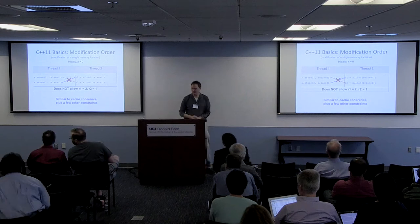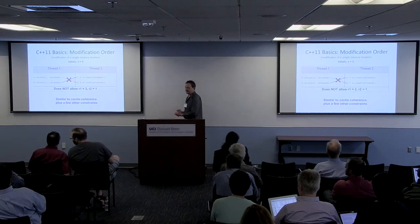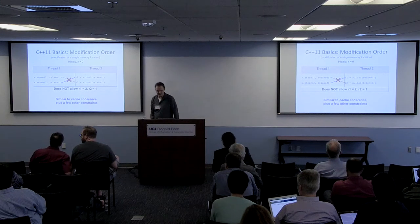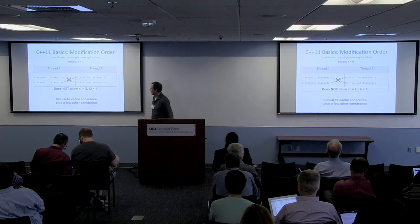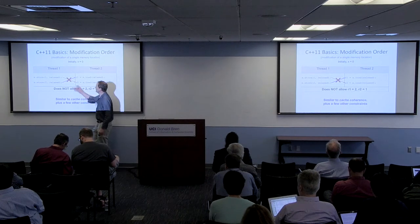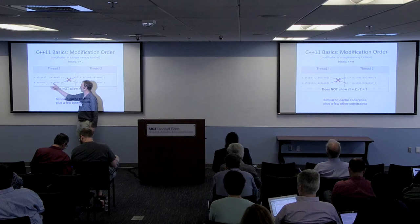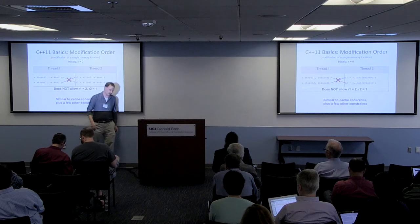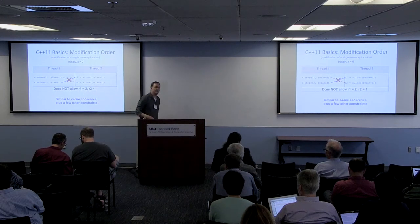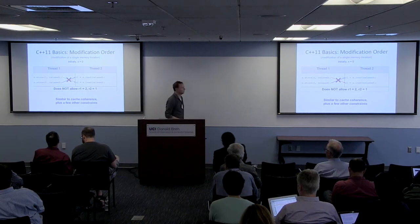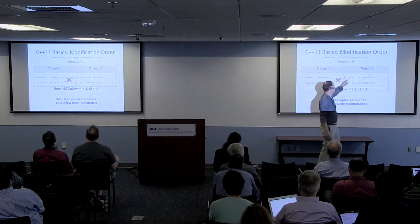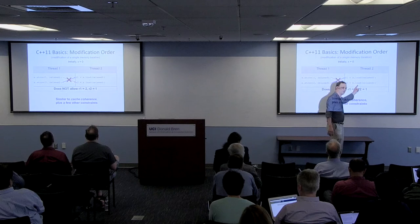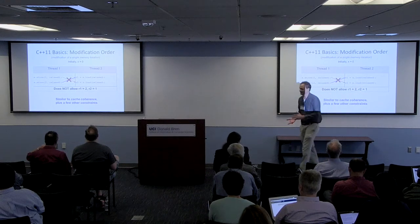The C and C++ memory model also provides cache coherence for single memory locations via what's called the modification order. Consider a simple program where one thread stores one to X and then stores two. The C and C++ memory model does not allow the other thread to read the value two first and then one. So it's a cache-coherent property.